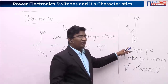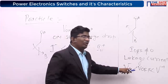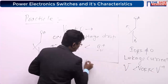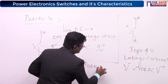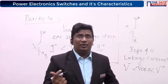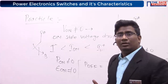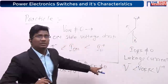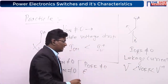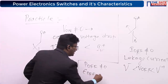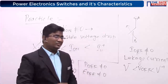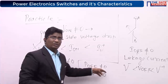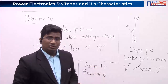Now, if the off-state current is finite and the voltage is also finite, what is the power loss during off-state? The power loss during off-state is also finite — not equal to zero. If power loss is not equal to zero, then energy loss is also not equal to zero.